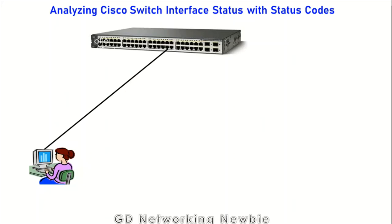Hi everyone. In our previous video we discussed how to configure the interface or port of a switch — the speed, duplex, shutdown, and no shutdown. But in some situations we may get problems where the port or interface of the switch may not work properly. In that case we need to verify the Cisco switch interfaces, and for that Cisco IOS provides us some status codes.